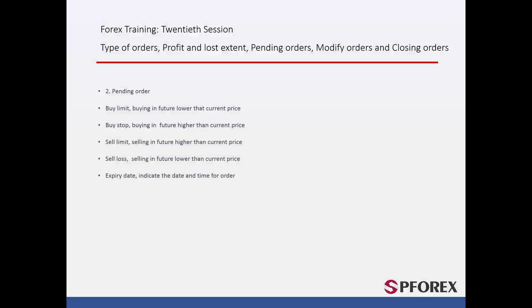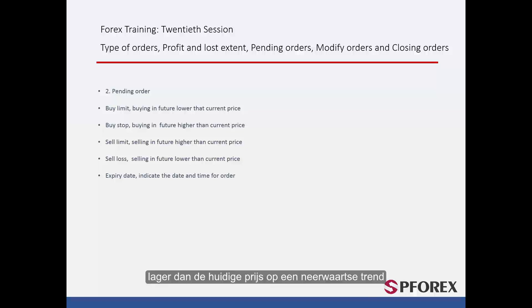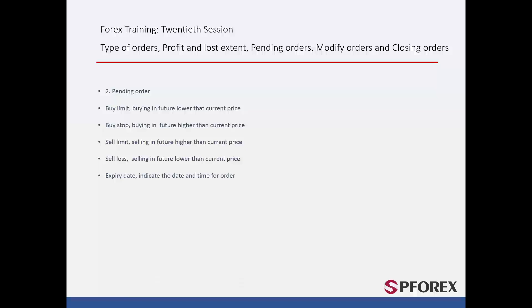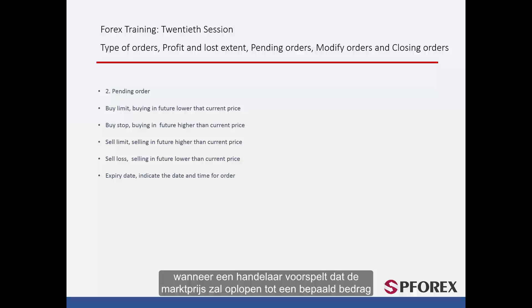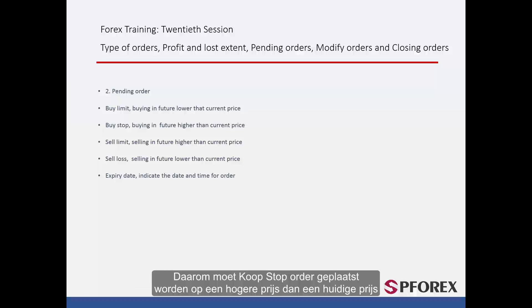Pending orders can be classified by limit and stop orders. A buy limit order should be placed when a trader speculates that the market trend will rise after it touches a certain entry price lower than the current price on a downward trend. Buy stop orders are assigned on a higher price when a trader predicts that the market price will go up to a certain amount followed by further increase. Therefore, a buy stop order must be placed on a price higher than the current price.